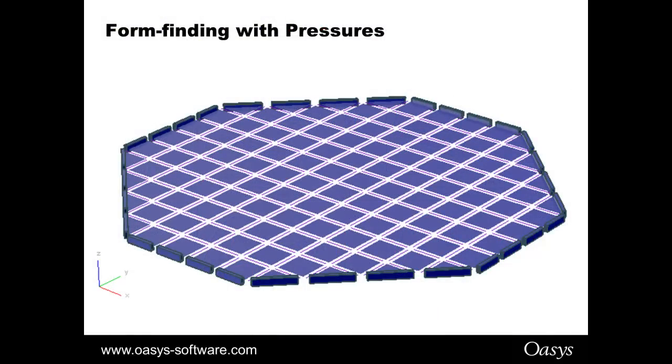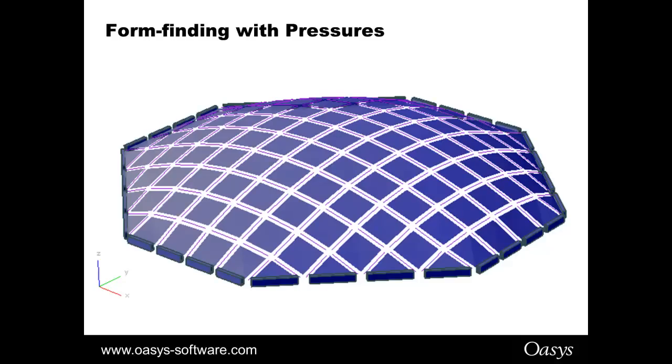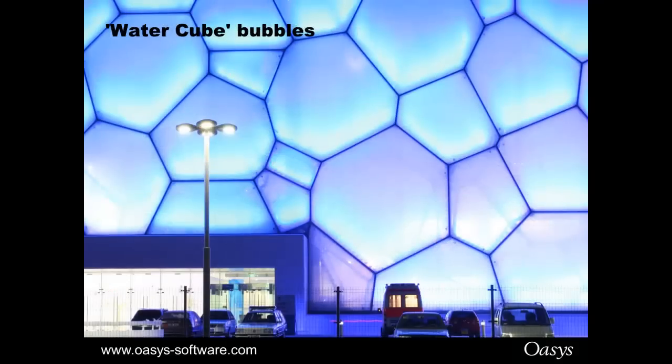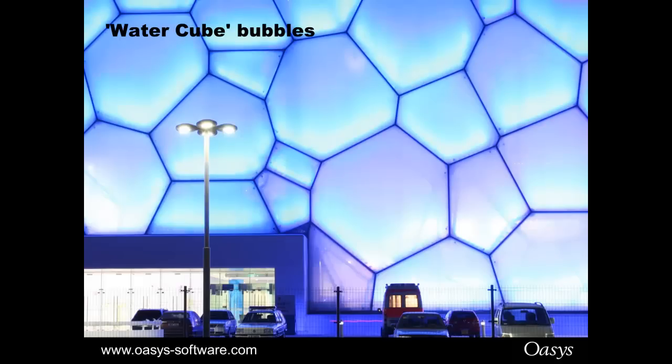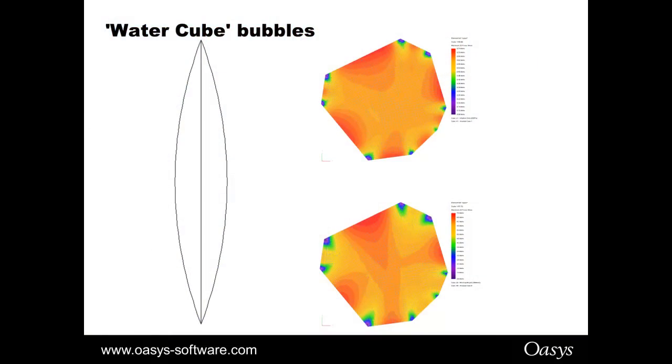You can also do form finding with pressures. If you are doing ETFE cladding and so on with inflated shapes you will need to do this. Basically you include a pressure in the form find which then generates you the initial inflated shape. One example a few years ago now, Beijing Olympics the Water Cube. GSA was used to form find the ETFE cladding and for sub-loading as well. ETFE can yield under the inflation loads but for the large panels the yielding would have been excessive and actually damaged the foil so you had to do the cutting patterns on the ETFE for the large panels before the inflation up to service loads.